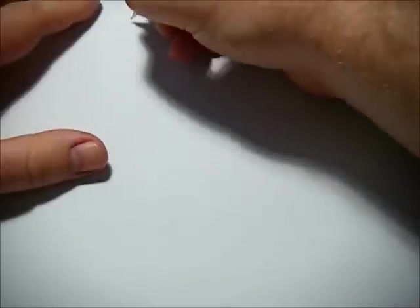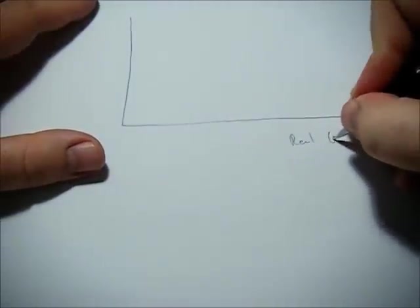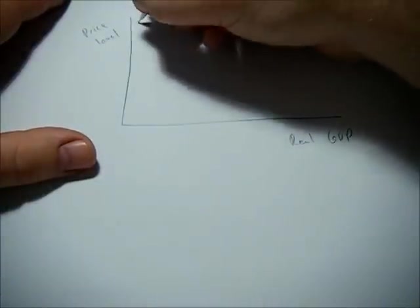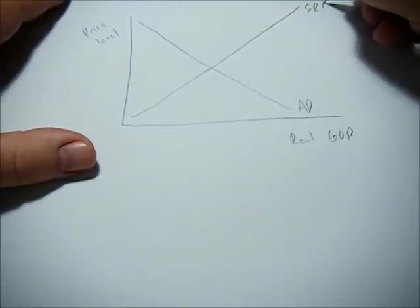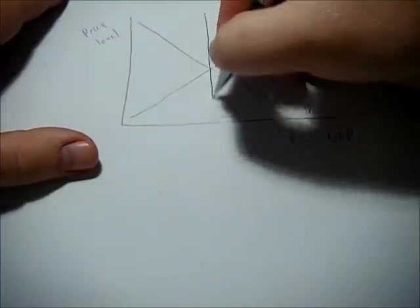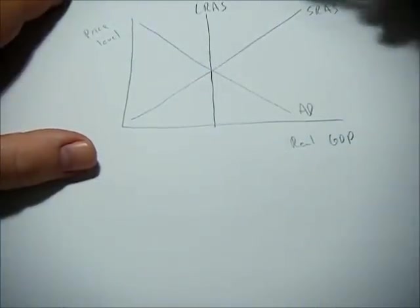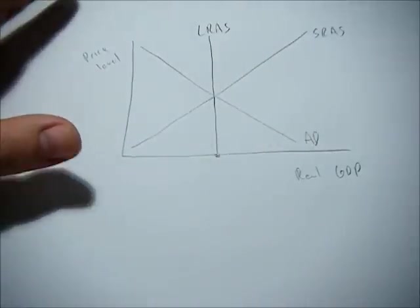So let's go through an example real quick on a graph that isn't as busy. We have real GDP, price level. Our aggregate demand slopes down. Our short run aggregate supply slopes up, and our long run aggregate supply is fixed at some long run equilibrium of real GDP.